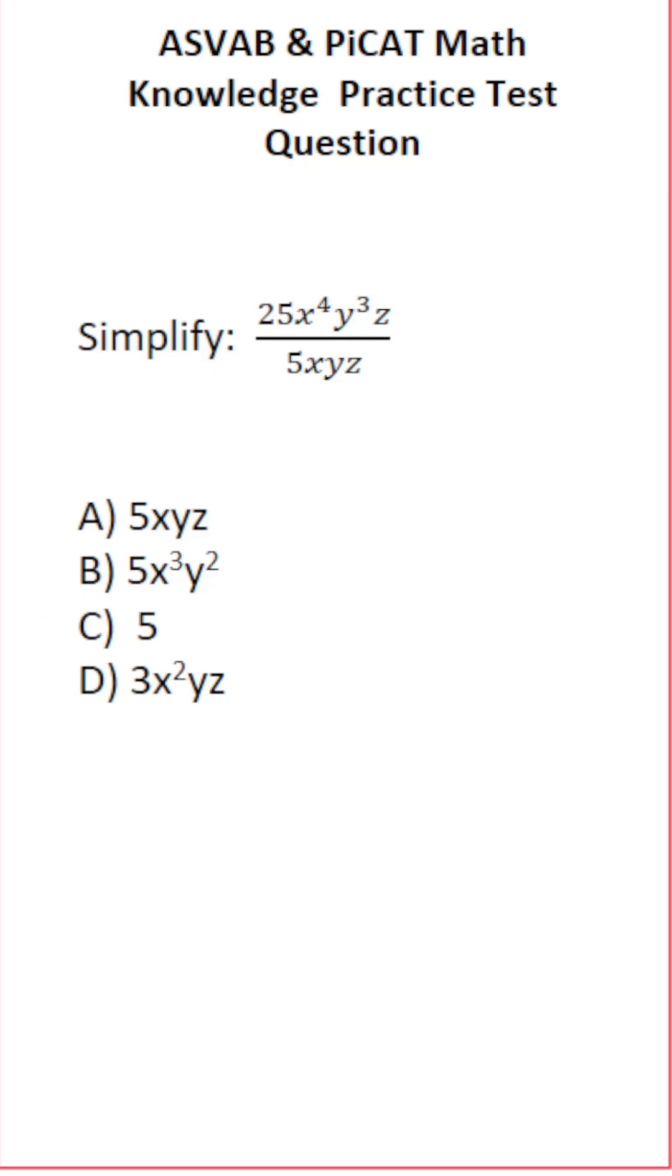In this case we're simplifying this expression and in order to do that we have to know one of the laws of exponents, notably the quotient rule which says this: If you have a to the m over a to the n that's equal to a to the m minus n.